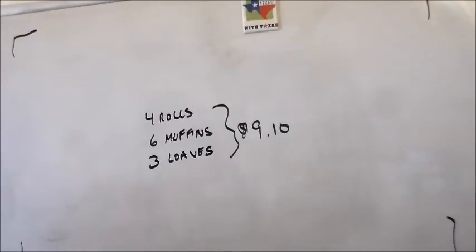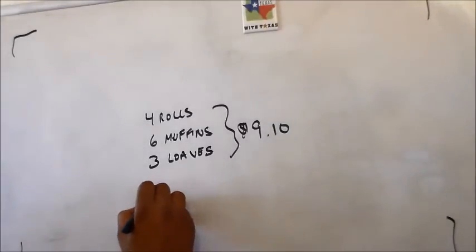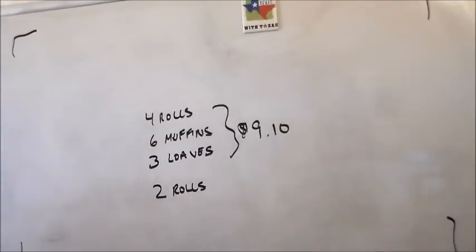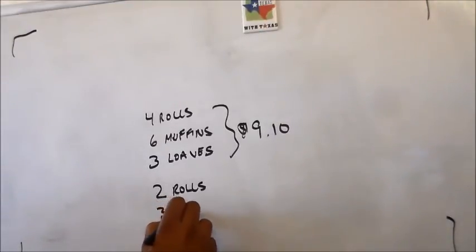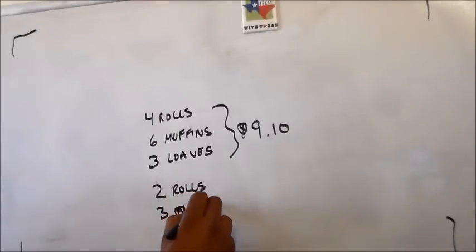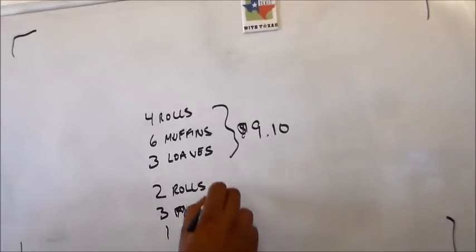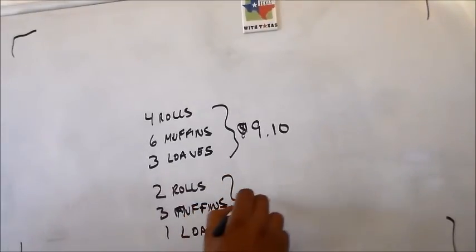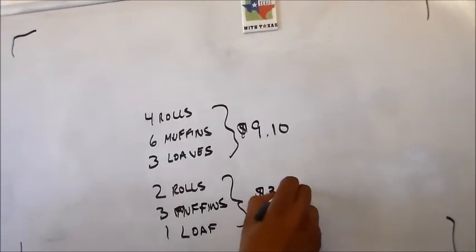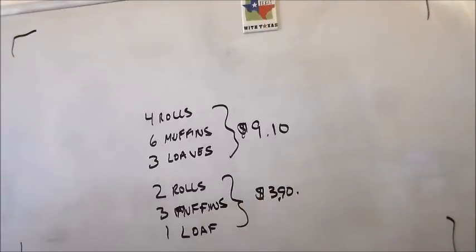The cost of two rolls and three muffins and a loaf of bread is $3.90. So two rolls, three muffins, and one loaf equals $3.90. The question is asking us: what is the cost of a loaf of bread?